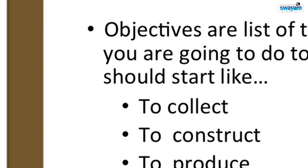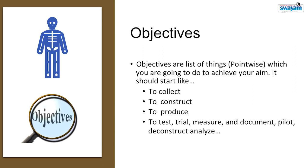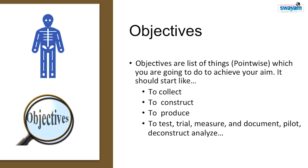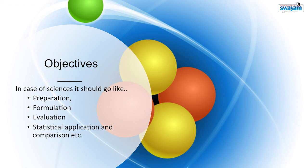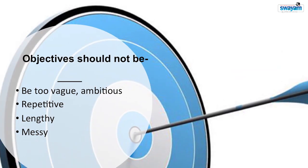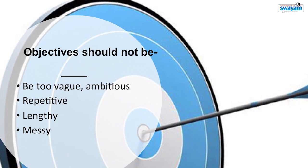Objectives should be in good tune with each aim; you will visualize the sequence of steps through which you are going to achieve your aim. Objectives should start like: collect, construct, produce, test, trial, measure, document, pilot, deconstruct, reconstruct, analyze. In case of sciences: preparation, formulation, evaluation, statistical application, and comparison. Remember that objectives should not be too weak or too ambitious, not repetitive, not lengthy, and not messy.